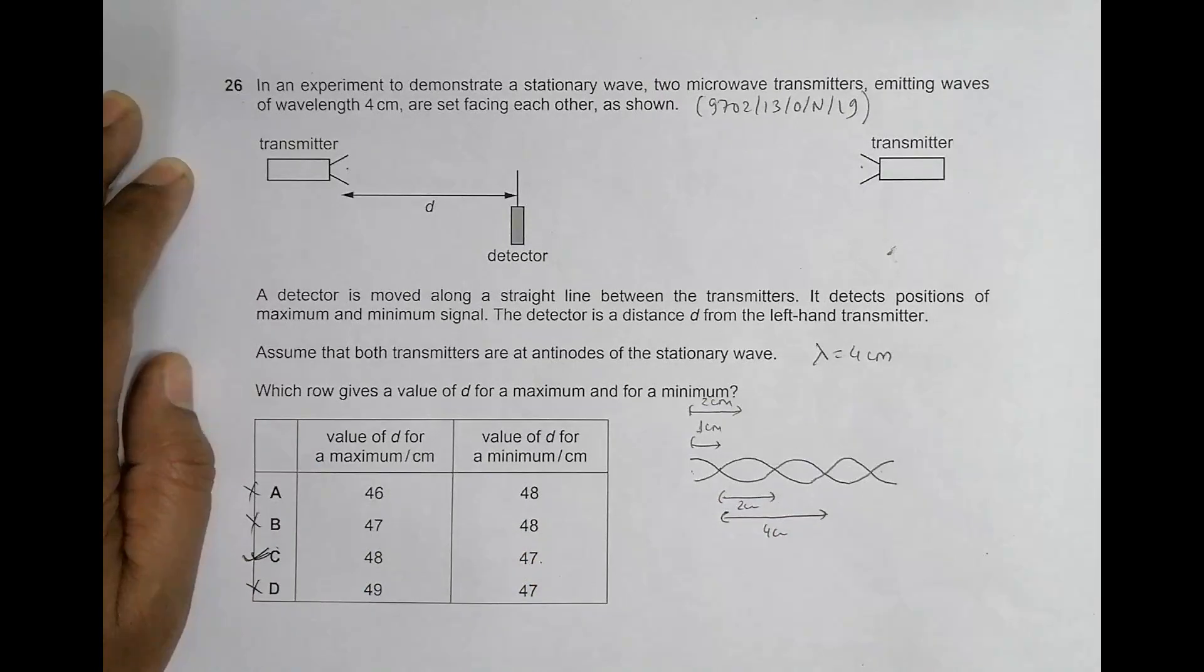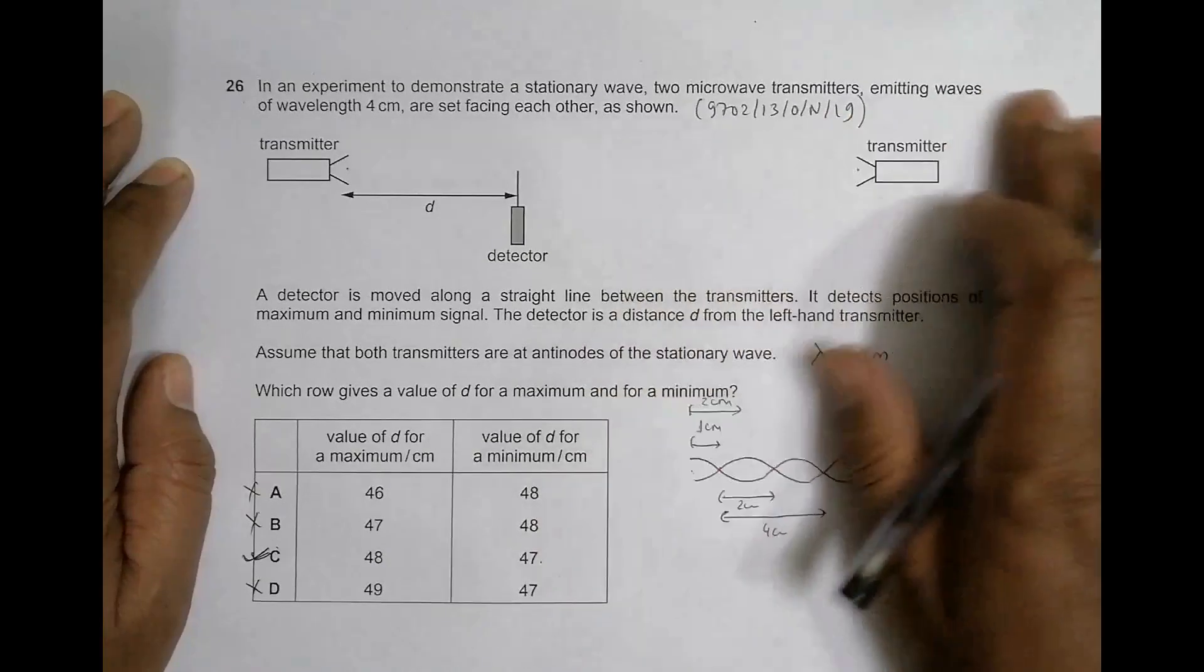So we don't need to do all the calculations here. Just we have to know that the antinodes or maxima will be formed at even centimeters and the minima or the nodes will be formed at odd centimeters, which gives us our correct answer.